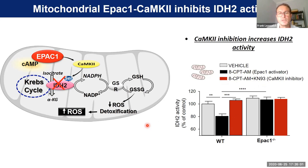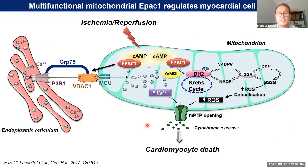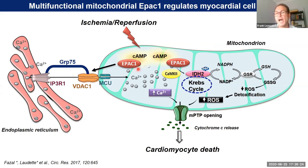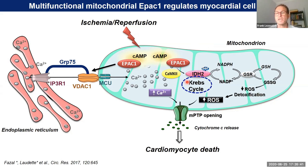We propose the following model: during ischemia-reperfusion, there is a burst of cyclic AMP produced independently of the beta-adrenergic receptor via activation of soluble adenylate cyclase. EPAC-1 is then activated and has multiple actions inside the mitochondria — there is calcium transfer from the ER to mitochondria and increased ROS production. Together, this calcium overload and ROS production may trigger cardiac myocyte death via opening of the MPTP.